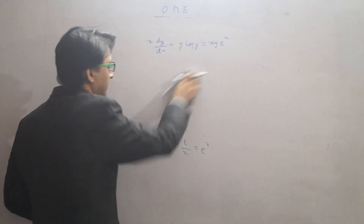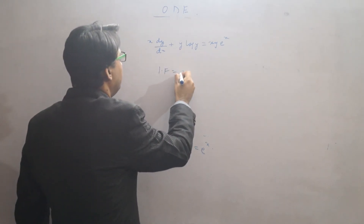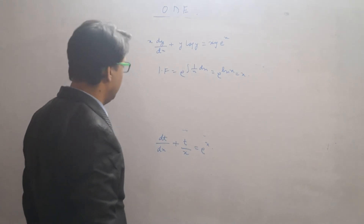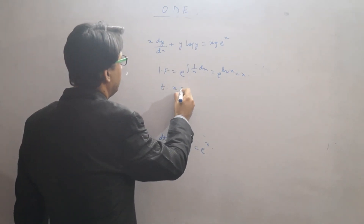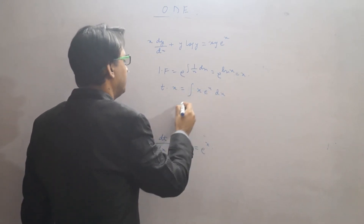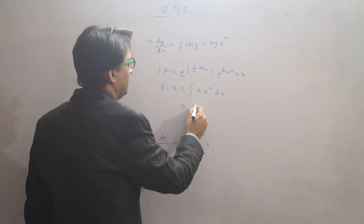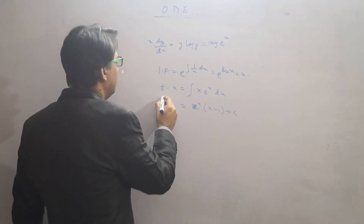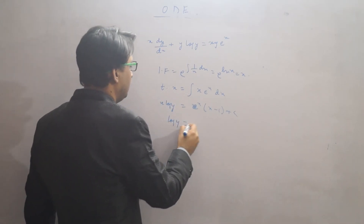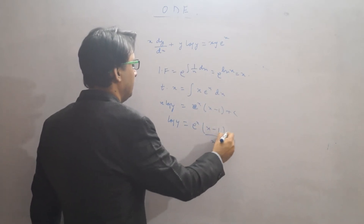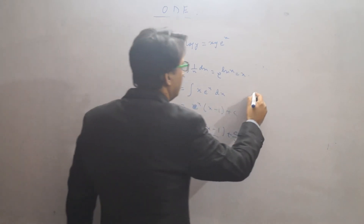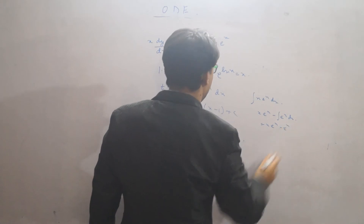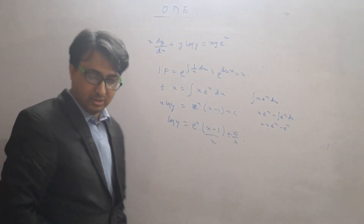We will find its solution. The integrating factor is e to the power of the integral of (1/x) dx, which equals e to the power ln x, that is x. So our solution is t times x equals the integral of x times e^x dx. Since t equals log y, we get log y times x equals x·e^x minus e^x plus C — that is, e^x(x minus 1) plus C, by integration by parts. This was a civil services question already asked.